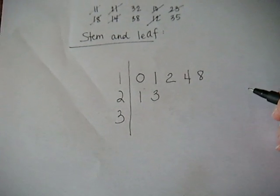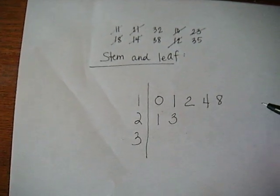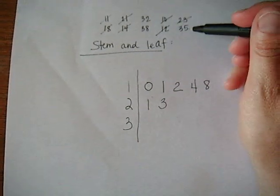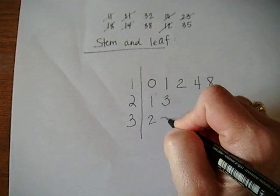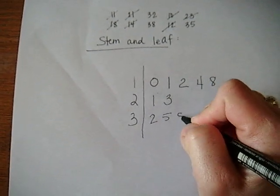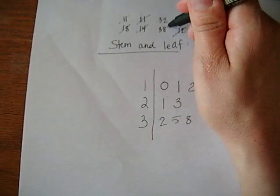Okay, last stem is the 3 stem. So we want to write down the numbers 32, 35, and 38. Get those last three numbers.